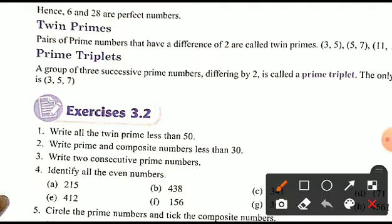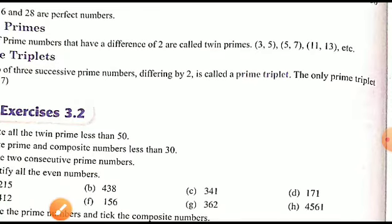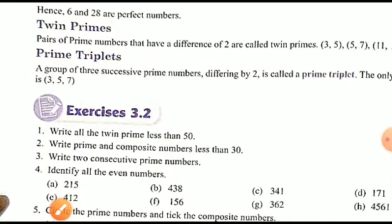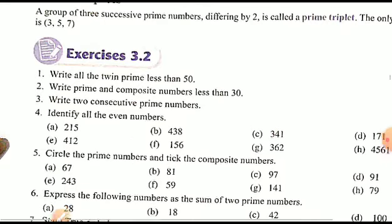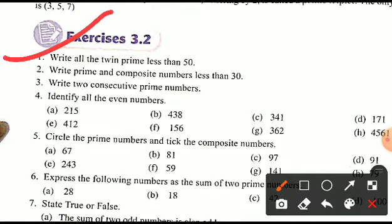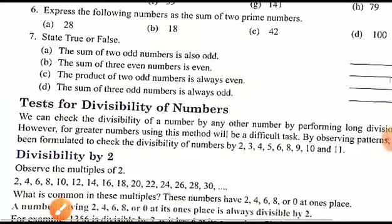The next topic is prime triplets. A group of three successive prime numbers each differing by 2 is called a prime triplet. The only prime triplet is (3, 5, 7) because the difference between consecutive numbers is 2. Exercise 3.2 is your homework — the questions are straightforward and you can solve them easily.